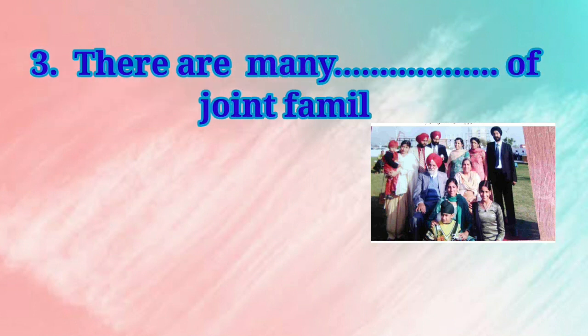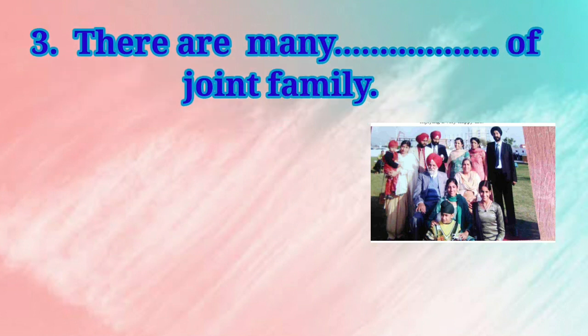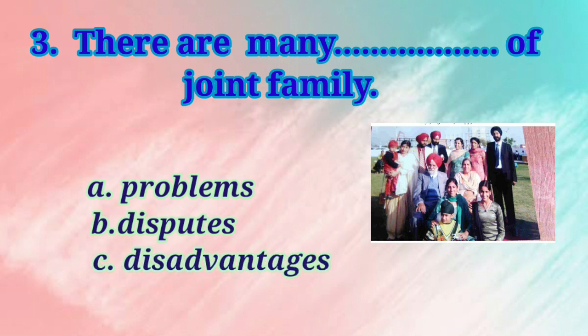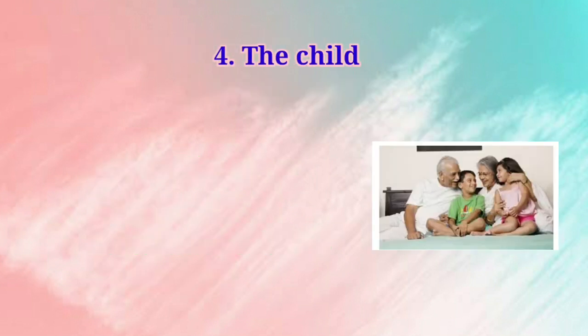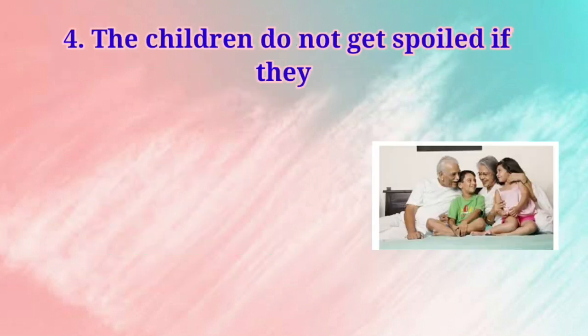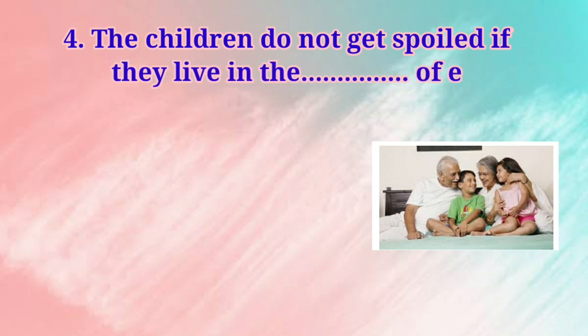Number 3: There are many dash of joint family. For filling this blank, the options are: Problems, Disputes, Disadvantages, or Benefits. Children, we have read in this chapter that there are many benefits of joint family. So, the correct option is D — Benefits.